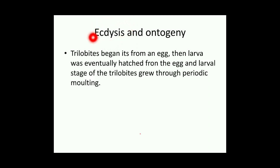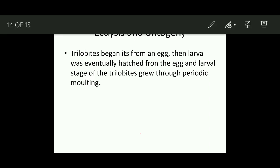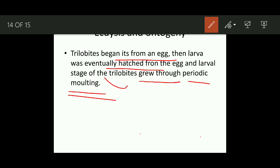Regarding ontogeny: when tracing the life history of an individual, we comment on its physical development — that is ontogeny. The trilobite life started from larvae. The larval stage of trilobites grew through periodic molting — similar to a snake shedding its skin to accommodate growing internal organs.